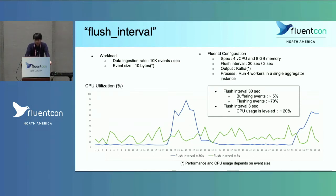One approach to use CPU efficiently is to use a shorter flush interval, like 3 seconds. I ran a similar benchmark with flush intervals of 30 seconds and 3 seconds. With a flush interval of 30 seconds, you can see peaky behavior — CPU utilization spikes every 30 seconds. To avoid this behavior, we recommend users to use a shorter flush interval like 3 seconds, which levels out CPU utilization.